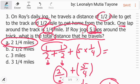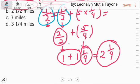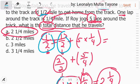Uulitin ko just in case nalilito kayo. I-add mo itong 1 half, dalawang 1 half kaya ito. Ang dalawang 1 half ay equivalent ng 1. Ito siya. Next, i-multiply mo si 5 sa 1 fourth kasi 1 lap around the track is 1 fourth mile. If Roy jogs 5 laps, so, i-multiply mo si 1 fourth ng 5.